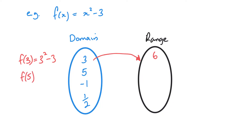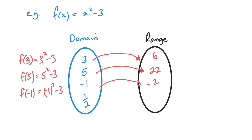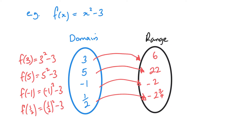Look at the next one: f of 5. So that's 5 squared minus 3 — 25 minus 3 is 22. If I substitute in minus 1 for my x, that's minus 1 squared minus 3, which gives minus 2. And then the final one: substitute in a half — half squared minus 3. Half squared is a quarter, so quarter minus 3 gives minus 2 and 3 quarters, or as an improper fraction, 11 over 4. That's the idea of what's happening with the function — it takes values of x and converts them into a y value, that f of x value.